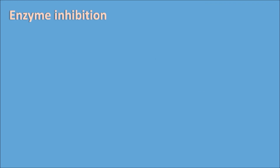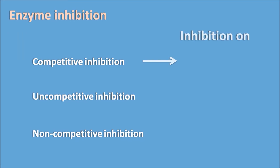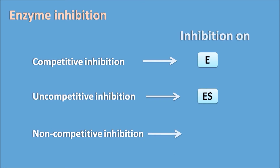Enzyme inhibition can be classified into three types: competitive inhibition, uncompetitive inhibition, and non-competitive inhibition. If inhibition acts on the enzyme alone, it is competitive inhibition. If inhibition acts on the enzyme-substrate complex, it is uncompetitive inhibition. If inhibition acts on both the enzyme and the enzyme-substrate complex, it is non-competitive inhibition.